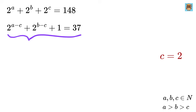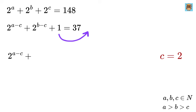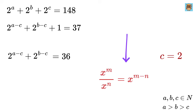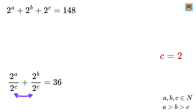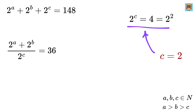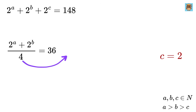Now, looking at the equation, we take 1 to the right-hand side to get 2 to the A minus C plus 2 to the B minus C equals 36. Using the power rule again, this can be rewritten as (2 to the A plus 2 to the B) divided by 2 to the C. Since C equals 2, 2 to the C equals 4. Multiplying both sides by 4 gives us 2 to the A plus 2 to the B equals 36 times 4, or 144.